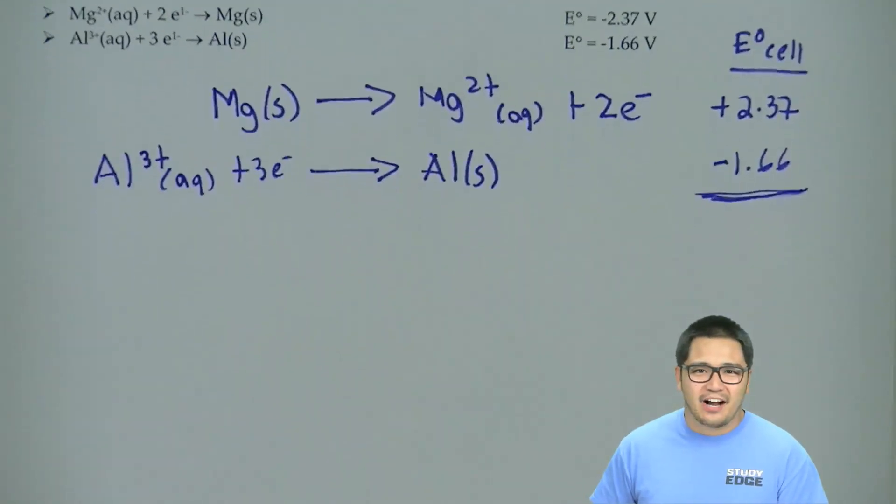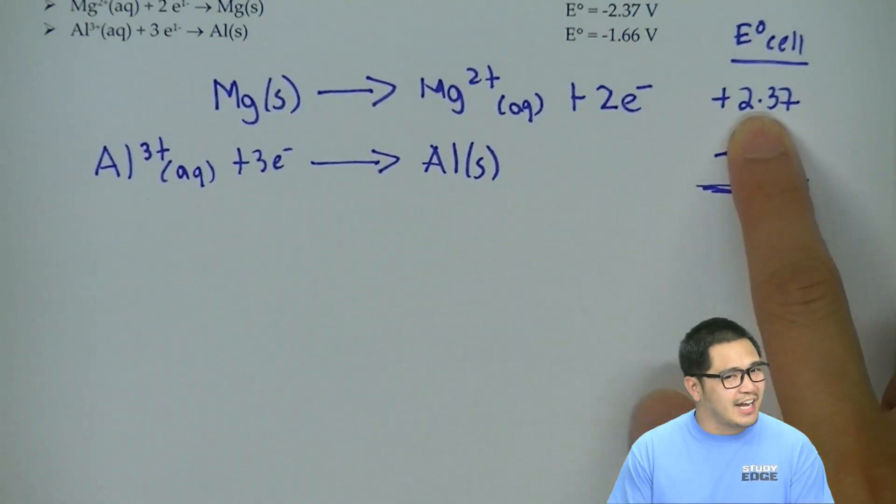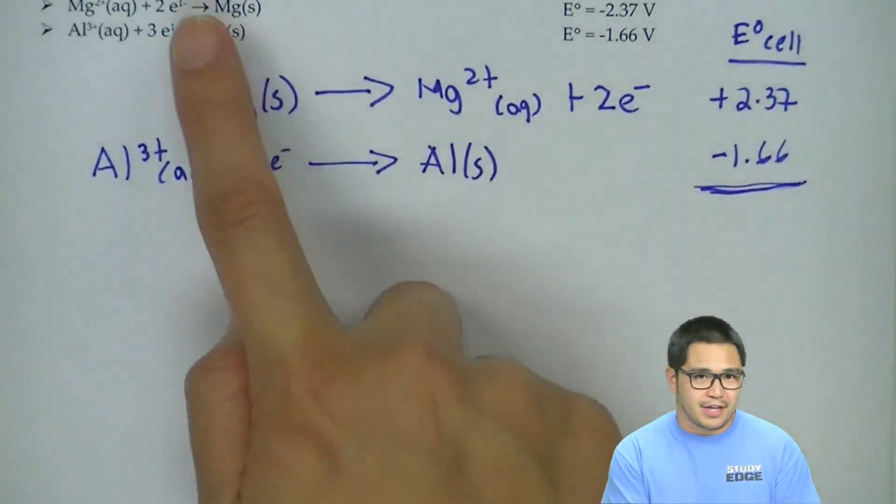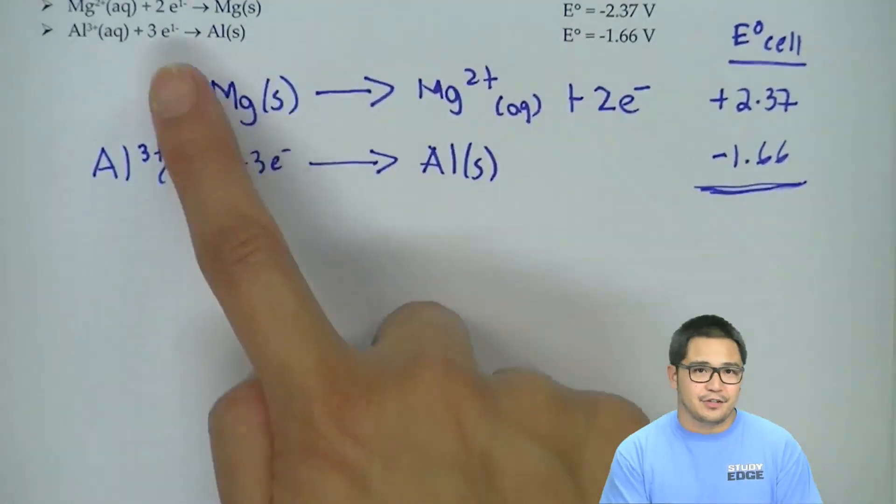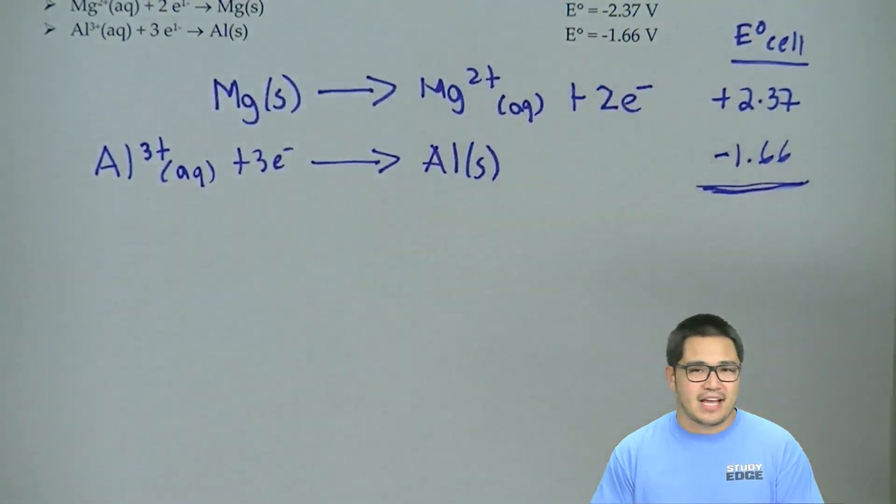Now, once we've figured that out, we're going to change the sign of our magnesium and flip it from the original because we flipped the reaction. And then the aluminum value we keep the same, negative 1.66.